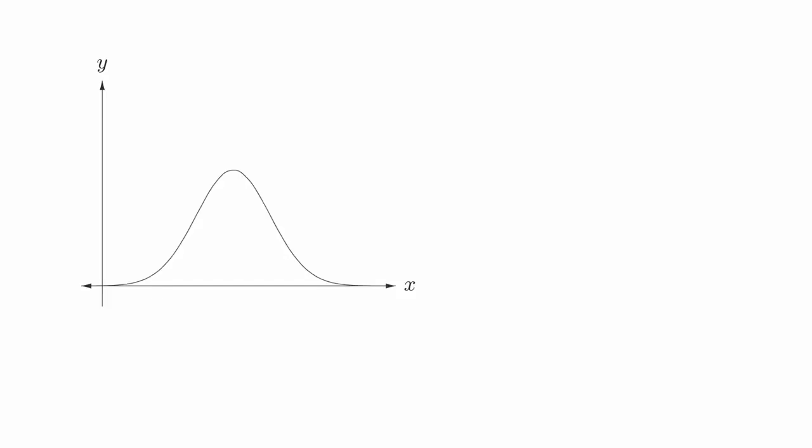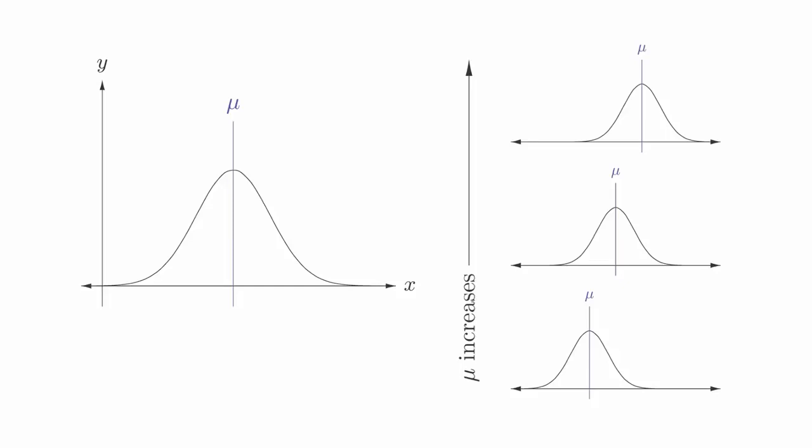This is what it looks like. It turns out that there are two parameters that we can change. One of those parameters is mu, which gives the location of the peak. As mu increases, the peak moves to the right. As mu decreases, the peak moves to the left. The value of mu turns out to be the mean of the data.